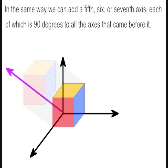In the same way, we can add a fifth, sixth, or seventh axis, each of which is 90 degrees to all the axes that came before it.